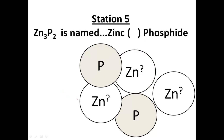Next one: I have three zincs and two phosphoruses — it's going to be called zinc something phosphide. Start with the non-metal phosphorus. Press pause and give it a shot. Phosphorus has a 3− charge, and with two phosphorus atoms that's 6− total. I need 6+ to balance, distributed over three zinc atoms — six divided by three gives 2+ on each one. Therefore the charge on zinc is 2+, and this is named zinc(II) phosphide.